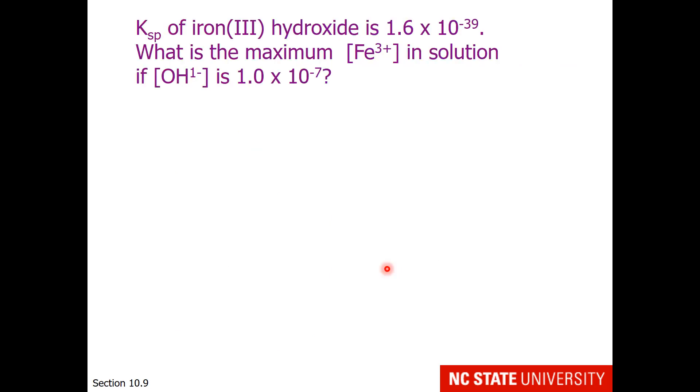Let's try a calculation. Ksp of iron 3 hydroxide is 1.6 times 10 to the minus 30. This would be at room temperature. What is the maximum iron 3 concentration in solution if the hydroxide concentration is 1 times 10 to the minus 7? Those of you who know something about pH recognize that this is a solution that is neutral at pH 7. First, we need to write the compound, followed by the dissolution reaction.